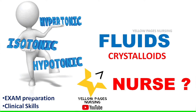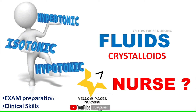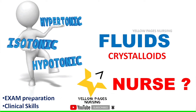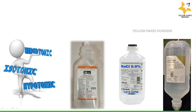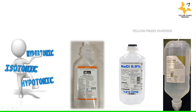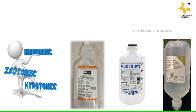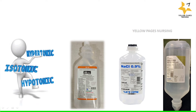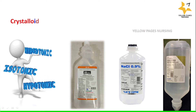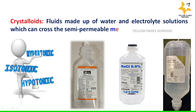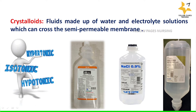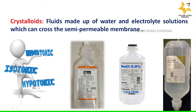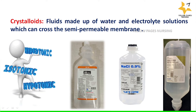When we say fluids, we often come across three common terms: hypotonic solutions, hypertonic solutions, and isotonic solutions. In this video we are going to discuss them in detail. These three solution types fall under one category called crystalloids — fluids made up of water and electrolyte solution that can cross the semi-permeable membrane.